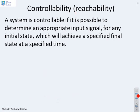Sometimes controllability may be referred to as reachability. A system is controllable if it's possible to determine an appropriate input signal for any initial state which will achieve a specified final state at a specified time.